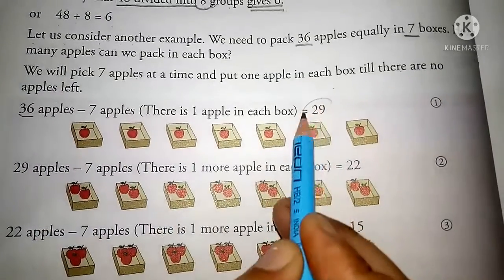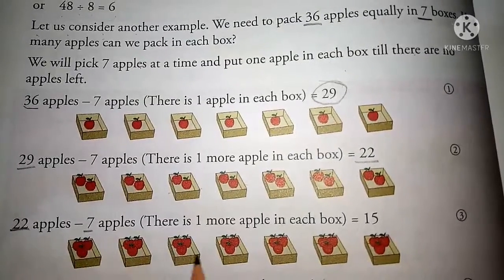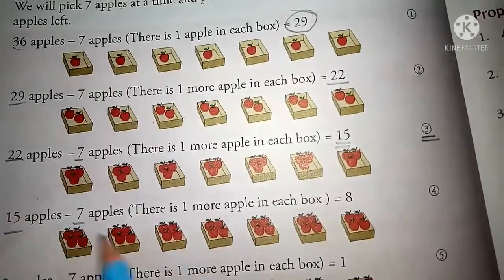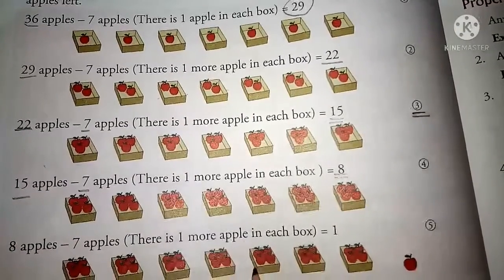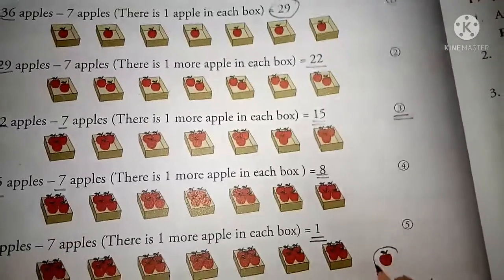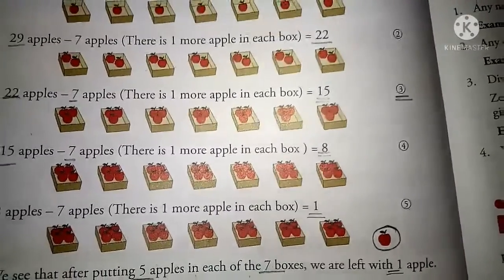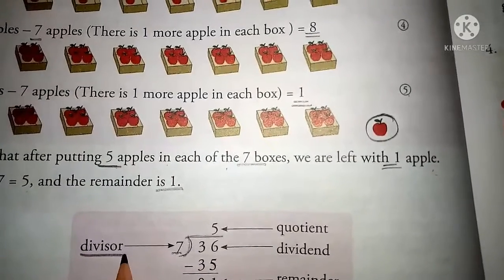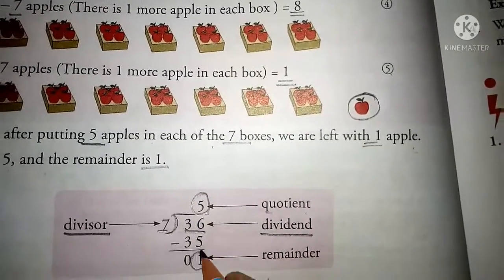First, 36 minus 7 equals 29 apples. 29 minus 7 equals 22. 22 minus 7 equals 15. 15 minus 7 equals 8. 8 minus 7 equals 1. We see that after putting 5 apples in each of the 7 boxes, we are left with 1 apple. So 36 divided by 7 is equal to 5 and the remainder is 1.